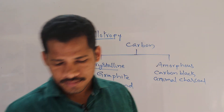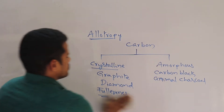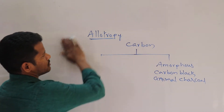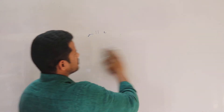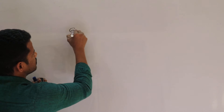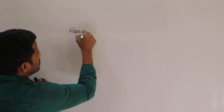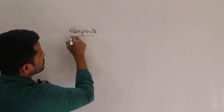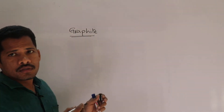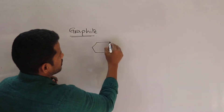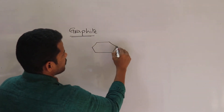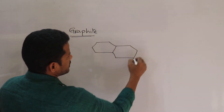So get ready. This session I will discuss one by one about graphite, diamond, and fullerenes. First we are going to discuss about graphite.